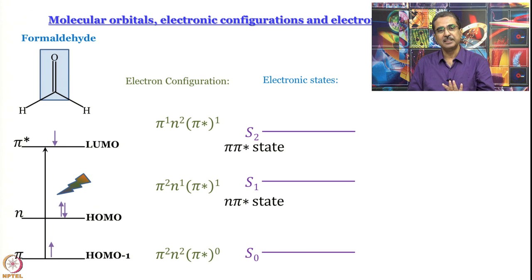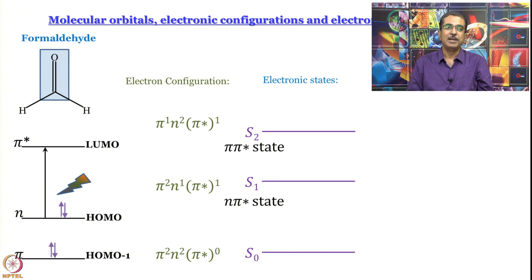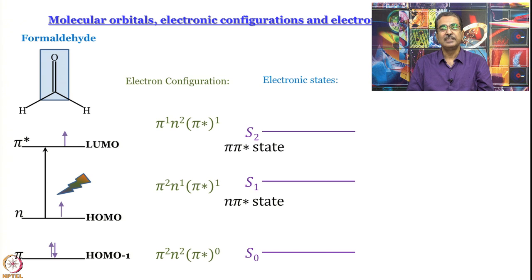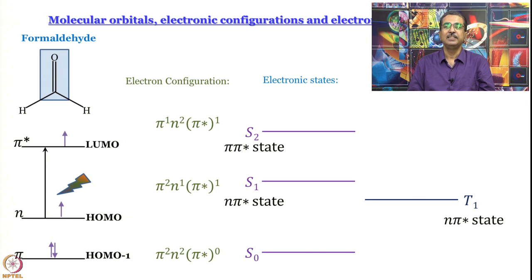Can we have transitions involving the same molecular orbitals but different molecular states? Yes, we can. Consider the same n-pi* transition, but this time the electrons have the same spin — there has been a spin flipping. This kind of state is called a triplet state. It turns out this state has a slightly lower energy than the S1 state. It is still an n-pi* state like S1, but lower in energy.